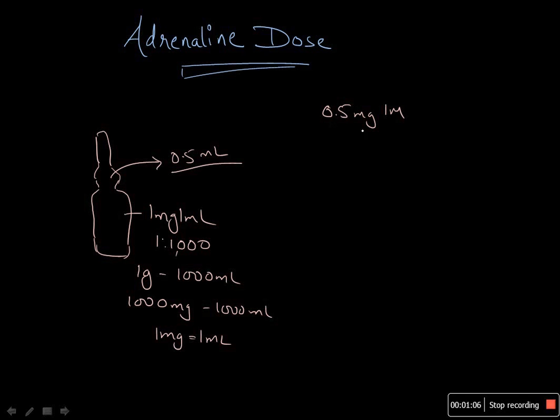0.5 mg intramuscular 1:1000 is the dose for adults. If you were to give a dose to a 6 to 12 year old child, the dose would be 0.3 mg intramuscularly, and for under 6 it is 0.15 mg intramuscularly. These are the doses in the intramuscular route.